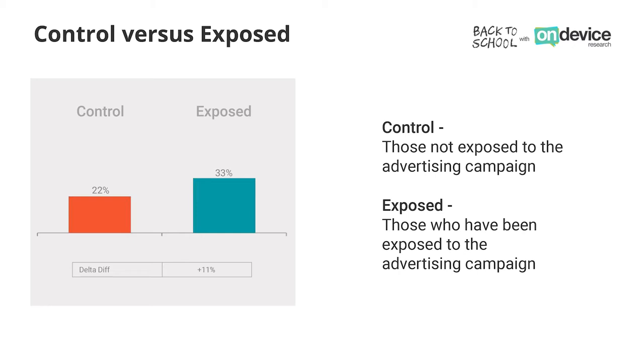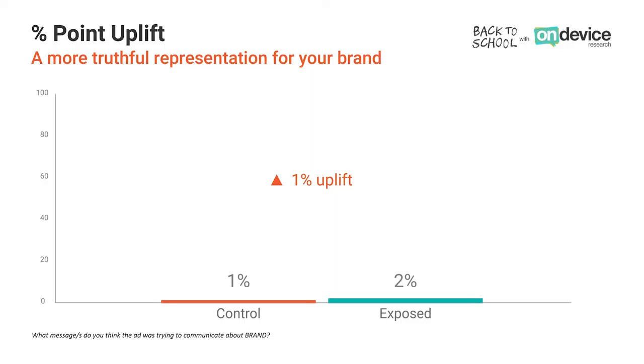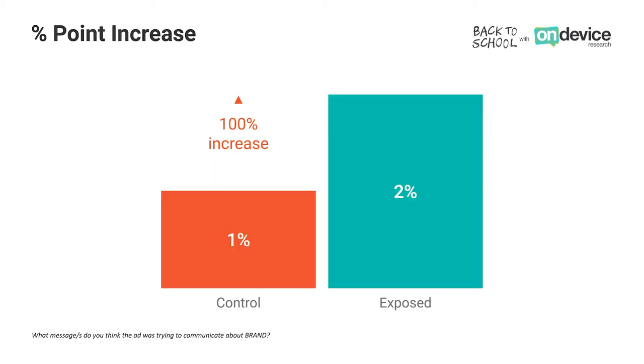On the left hand side we have the control versus the exposed, and this is at a total campaign level. The control are those that haven't seen the ad versus the exposed, who are those that have. Underneath there we have the delta difference, which is the difference between the control and exposed. At On-Device we use percentage point uplift rather than percentage point increase, because we believe it better reflects the success of the campaign. For instance, if awareness shifted from 1% to 2%, we would say that's a plus 1% uplift — whereas percentage point increase would call that a 100% increase, which can be quite misleading and not representative of exactly how successful the campaign has been.